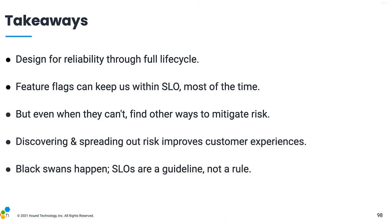Takeaways: if you're running your continuous delivery pipelines throughout the day, then stopping them should be the anomaly, not starting them. By designing our delivery pipeline for reliability through the full lifecycle, we've ensured that we're mostly able to keep going no matter what. Feature flags keep us within our SLOs most of the time by managing the blast radius. Even when software flags can't do the trick, there are other infrastructure-level flags — like running special workers to segregate especially risky traffic. By discovering our risk at 3 p.m. not 3 a.m., it ensures that the customer experience is much more resilient and you're always designing for peak traffic.